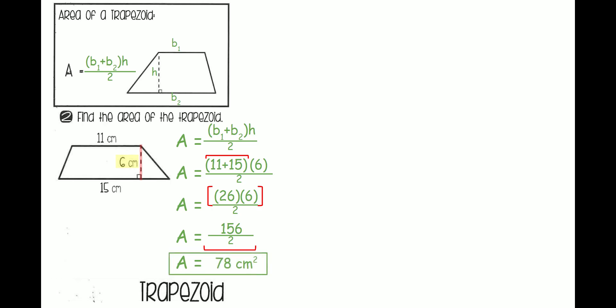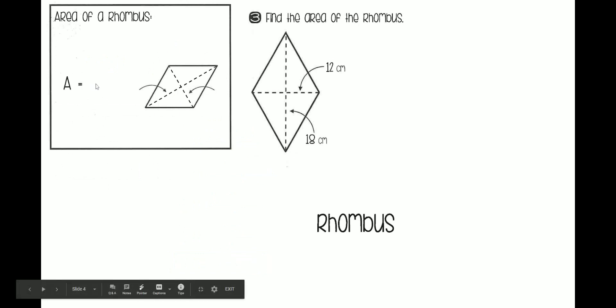And now, 156 divided by 2 is 78 centimeters squared. And that is our final answer. Finally, we are going to do our rhombus. Area of a rhombus.